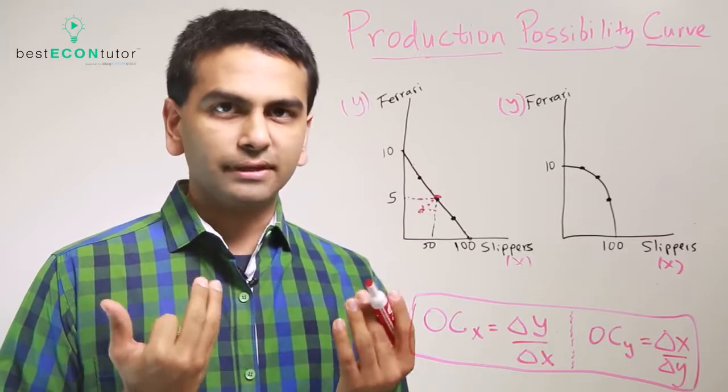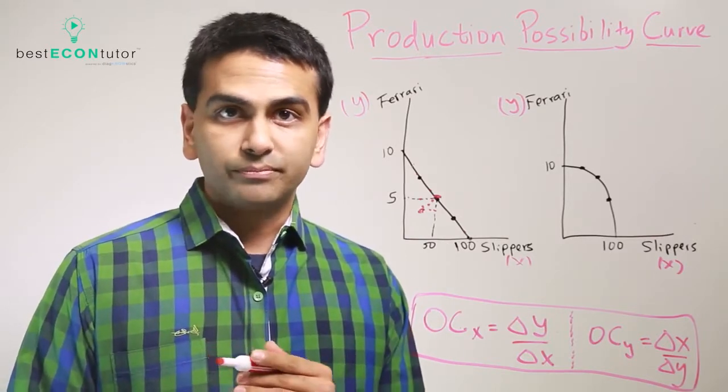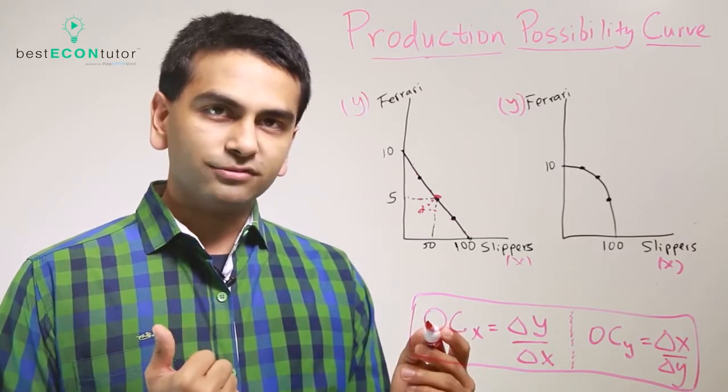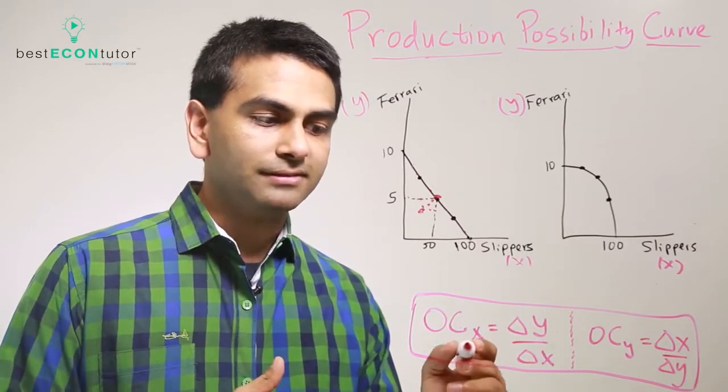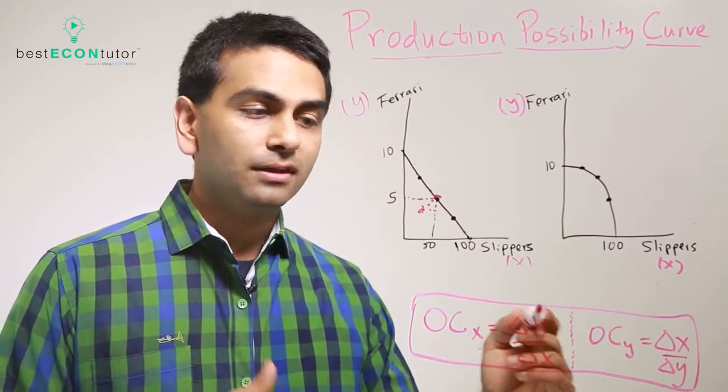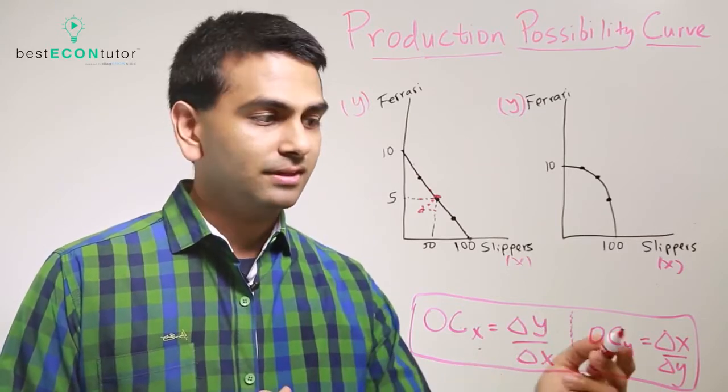If we wanted to look at the cost, what's the cost of making a Ferrari? We can use this formula that the cost of the good is the amount of the other good that you're giving up. The cost of good X would simply be the amount of good Y that you're giving up, divided by the amount of good X, and the other way around.